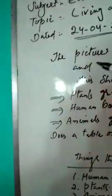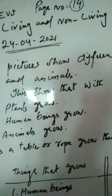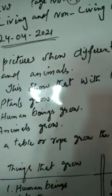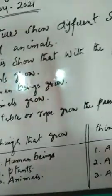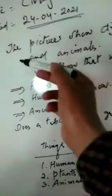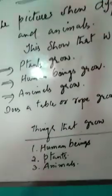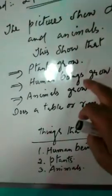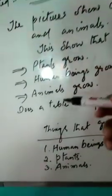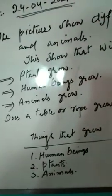The pictures show different stages of growth - human beings and animals. This means that the pictures show different stages of growth, human beings and animals.